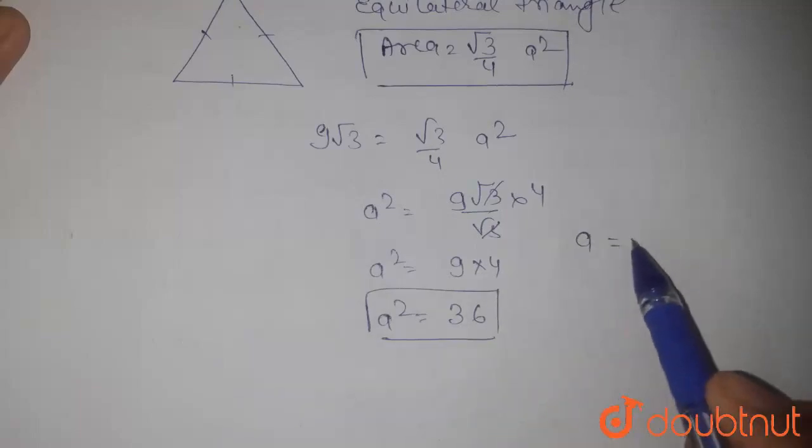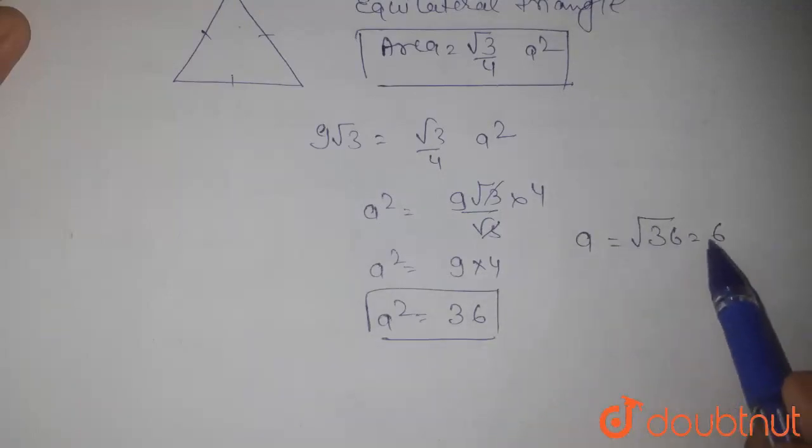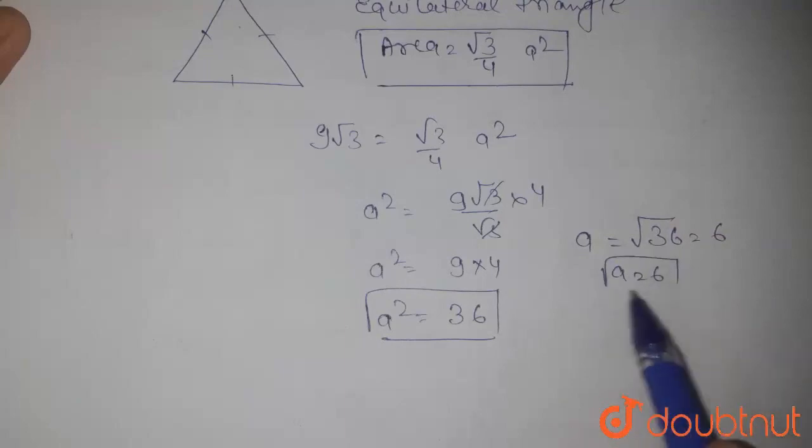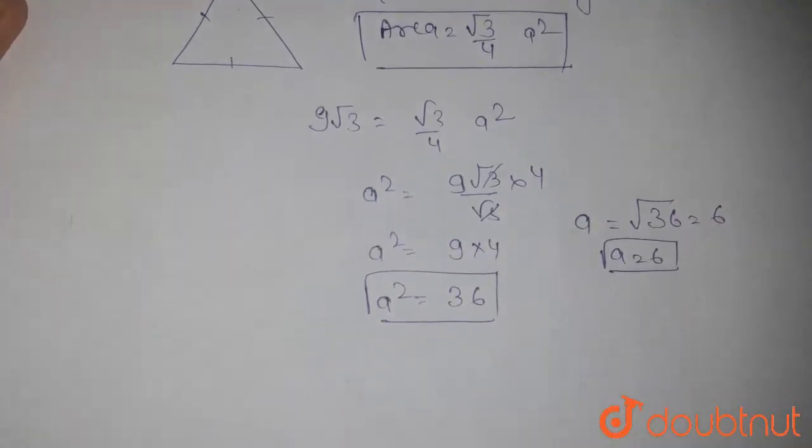The value of a will be root of 36 which is equal to 6. Then a equal to 6. Value of a is 6, meaning the side is 6.